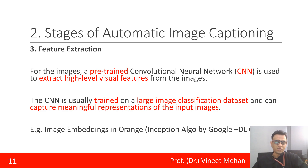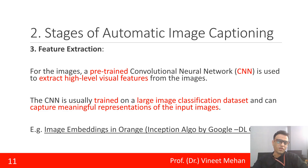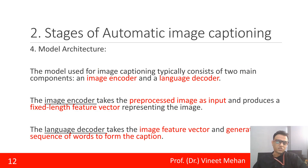The third stage is feature extraction. Since we are working with images, the input goes through a CNN — convolutional neural network — which has convolution layers and pooling layers to extract features and convert them into numerical representations called image embeddings. An example of this is the Inception algorithm used by Google.